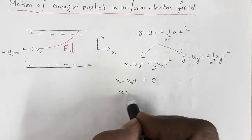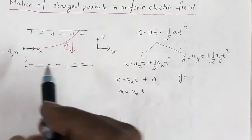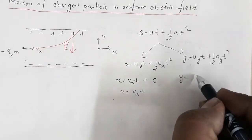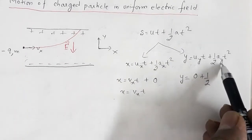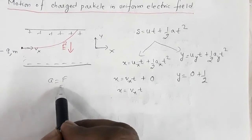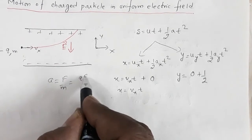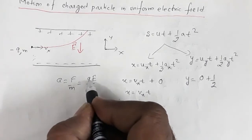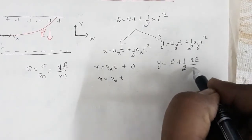So we have x = vx·t. For displacement along the y-axis: the charge particle is projected with initial velocity only along the x-axis, so the initial velocity along the y-axis is zero. Therefore y = ½·ay·t². The acceleration ay = F/m, and the force along the y-axis is qE, so ay = qE/m.